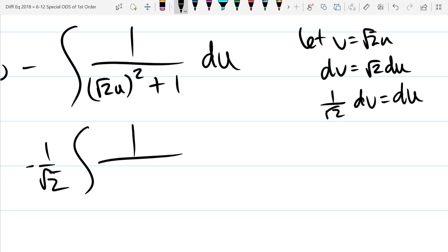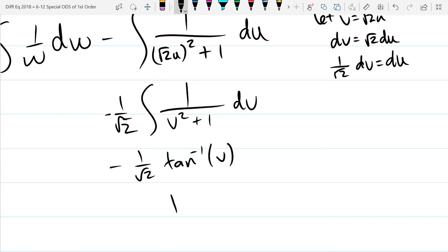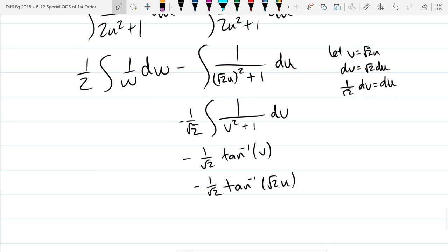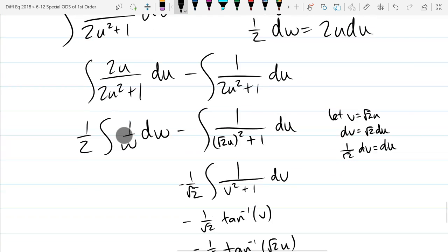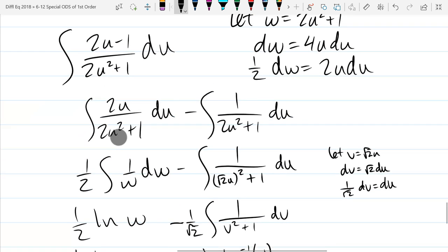That would not be a substitution. That would be writing a very stringent condition. So that should be our new form after subbing. Got my constant. So we've got negative 1 over square root 2 tan inverse v. And now we're unsubstituting, so it's tan inverse square root 2u.